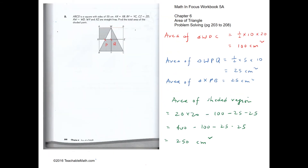Question 2 problem solving: we have a square with side 20. AX equals XB, YB equals YC, CZ equals ZD, and AW equals WD. The sides are 20 and all the small segments are equal.